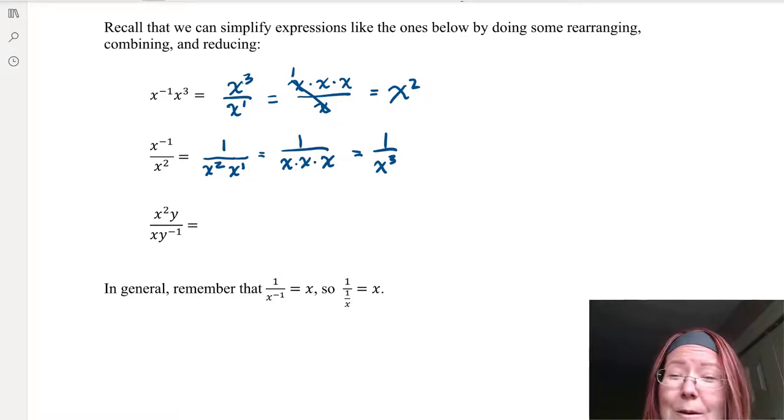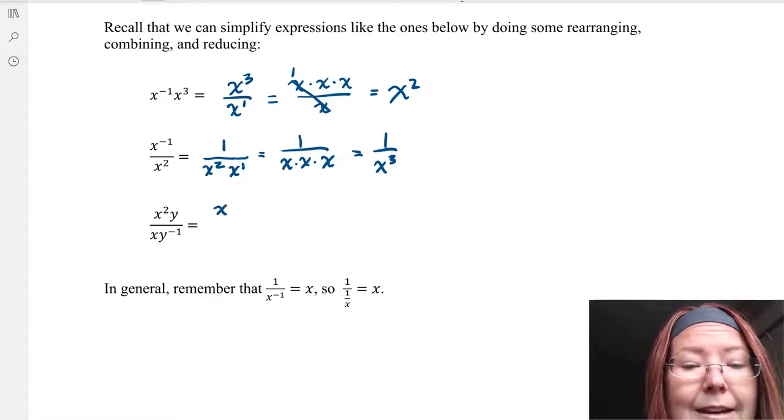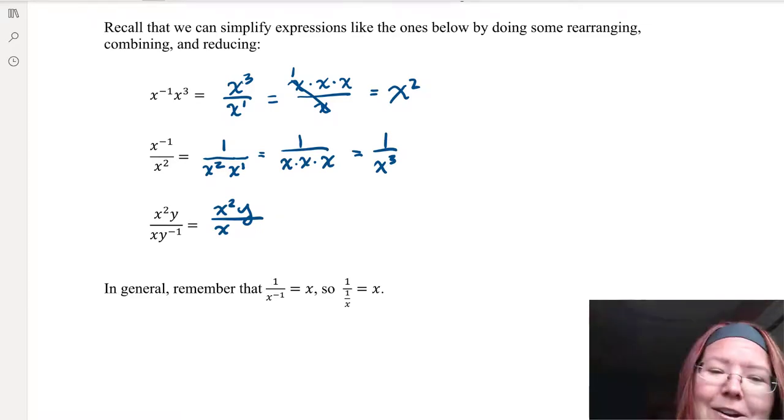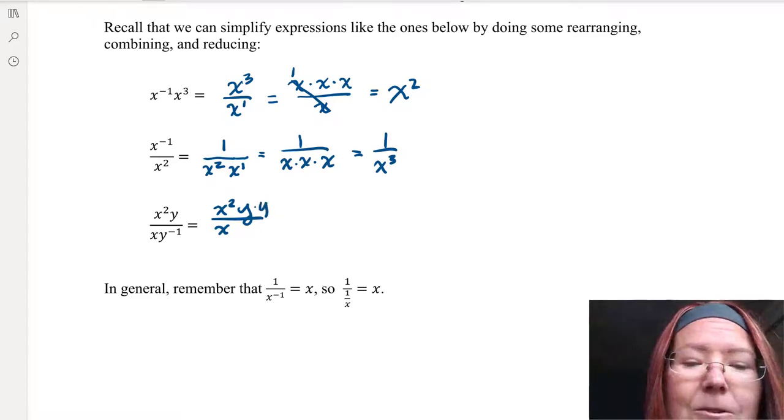The last one here, we have x squared times y over x times y to the negative first. The x squared y can stay put where it's at in the numerator. The x can stay put in the denominator, but the y to the negative first, let's move that to the numerator, making it y to the first.